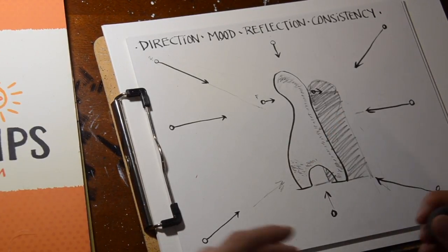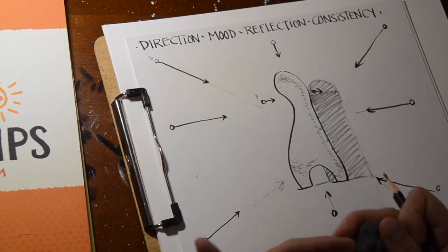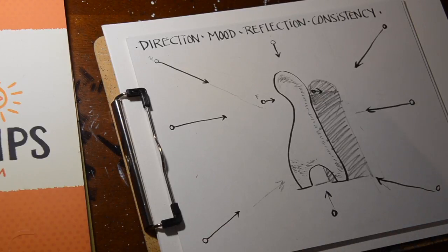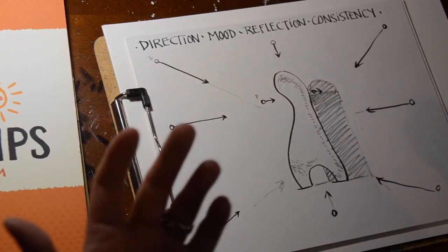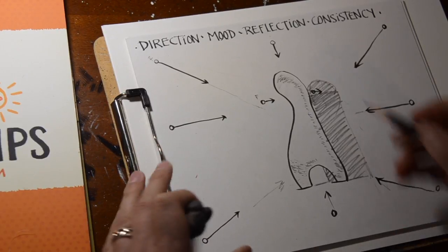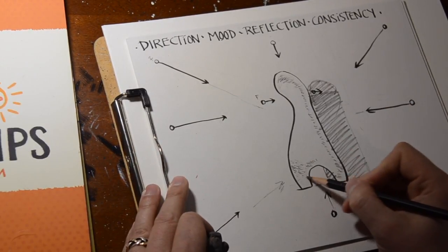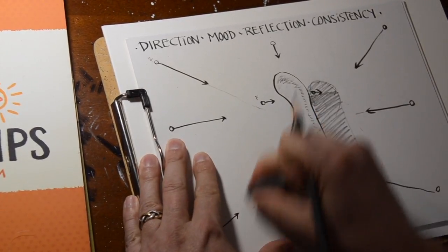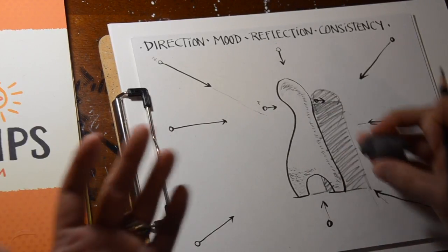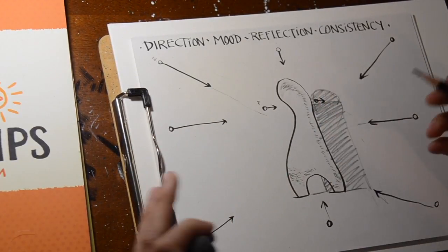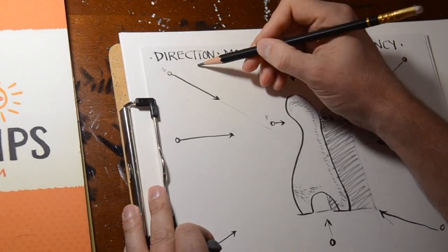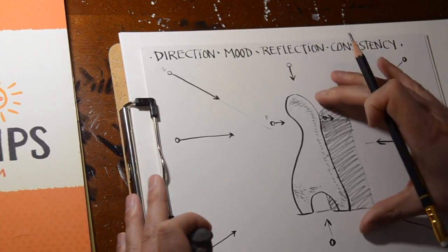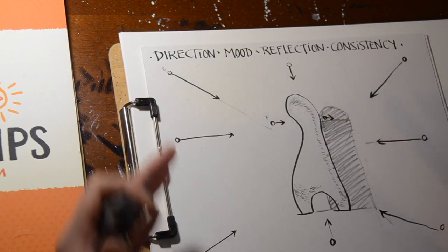Now, that doesn't mean always. There's times where you have to break a lot of these things in order to maintain the mood that you want. Or, well, mostly the mood. Yeah. I mean, that's what it comes down to. If, for whatever reason, this being not darkened helps with my mood and it doesn't distract from the overall drawing, then I can go ahead and I can play with that a little bit. But, for the most part, I need to keep direction in mind. I need to keep mood in mind. I need to keep the reflection or refractive lighting in mind. And I need to do these things consistently.